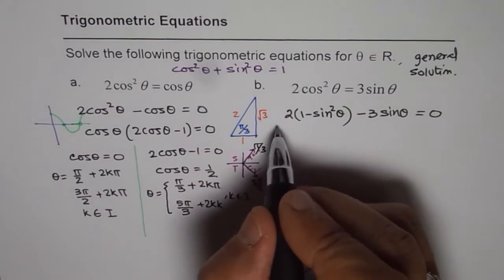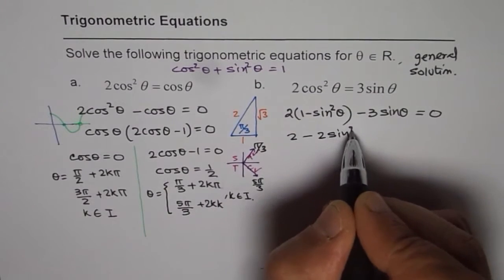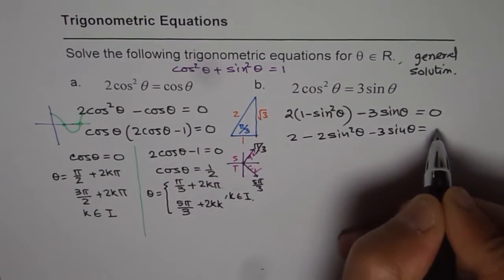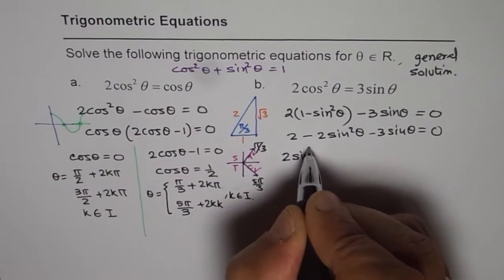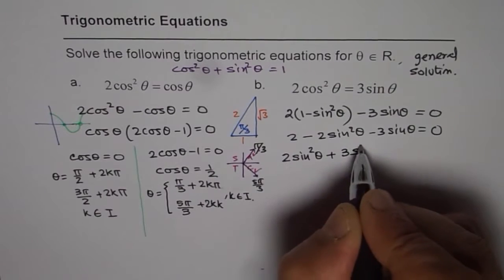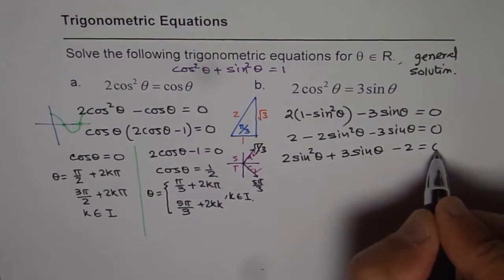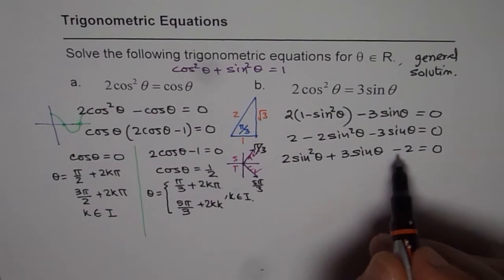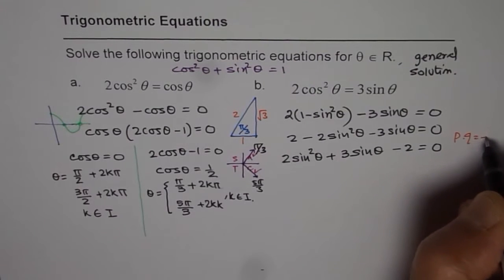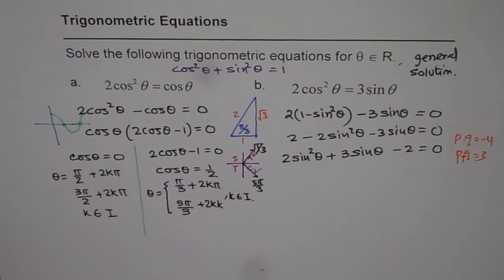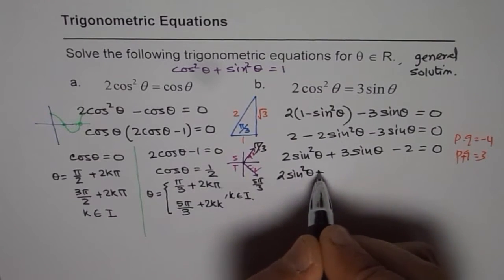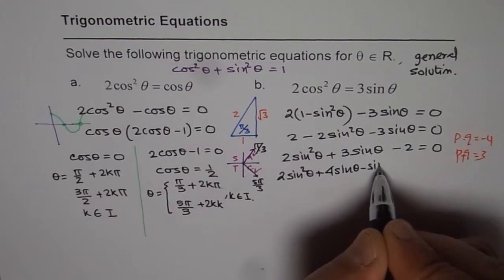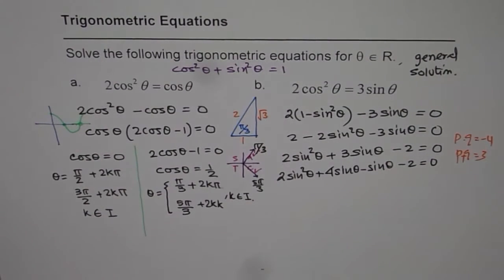Expanding, we get 2(1 minus sin squared theta) minus 3 sin theta equals 0, which gives 2 minus 2 sin squared theta minus 3 sin theta equals 0. Rearranging to have a positive leading coefficient: 2 sin squared theta plus 3 sin theta minus 2 equals 0. To factor, we need two numbers whose product is minus 4 and whose sum is 3, which gives plus 4 and minus 1. So we rewrite as 2 sin squared theta plus 4 sin theta minus sin theta minus 2 equals 0.